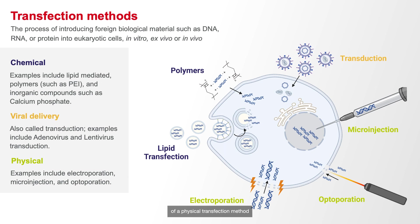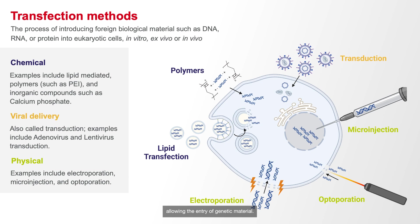Electroporation is an example of a physical transfection method that involves applying an electric field to create temporary pores in the cell membrane, allowing the entry of genetic material.